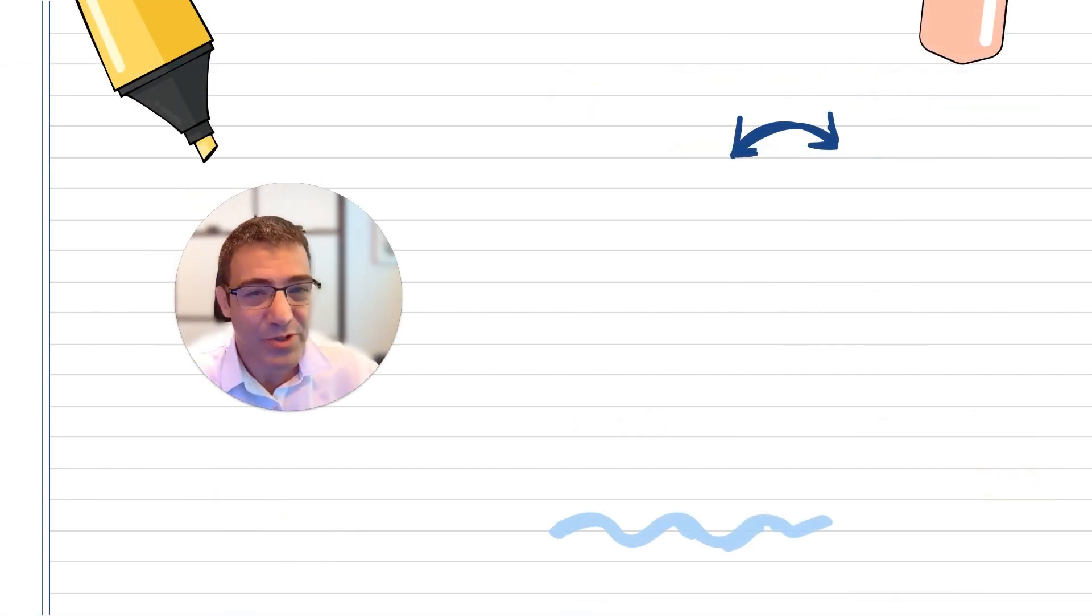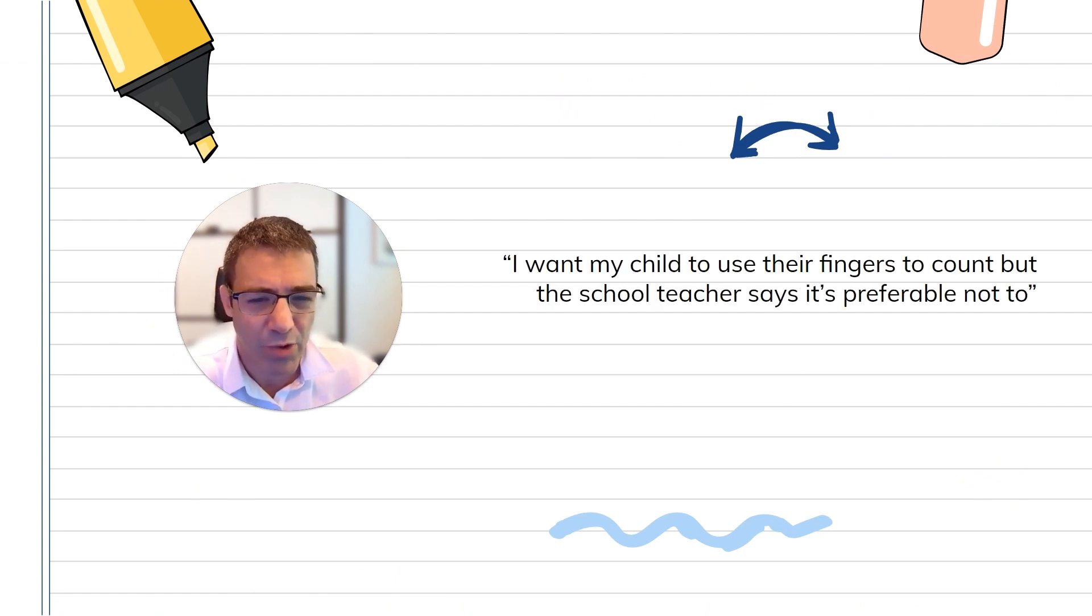Here's a question which I received last week and pretty frequently from some of our parents. I want my child to use their fingers to count, but the school teacher says it's preferable not to. Why is that? Well, thinking about adding quantities like going from 9 to 12 and going 9, 10, 11, 12, it's okay to count forward and add quantities.